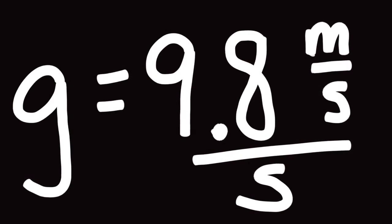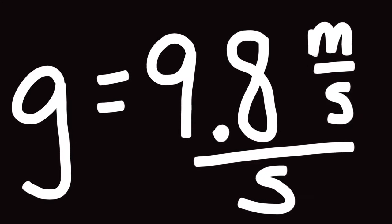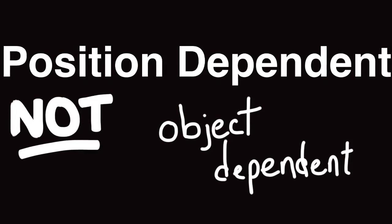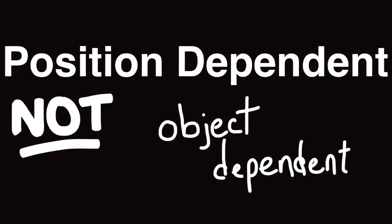The value, again, is 9.8 units or meters per second every second. Again, I want to reemphasize g changes. Don't think of it as a constant. It is dependent upon the position, where you are. It's not dependent upon the object.